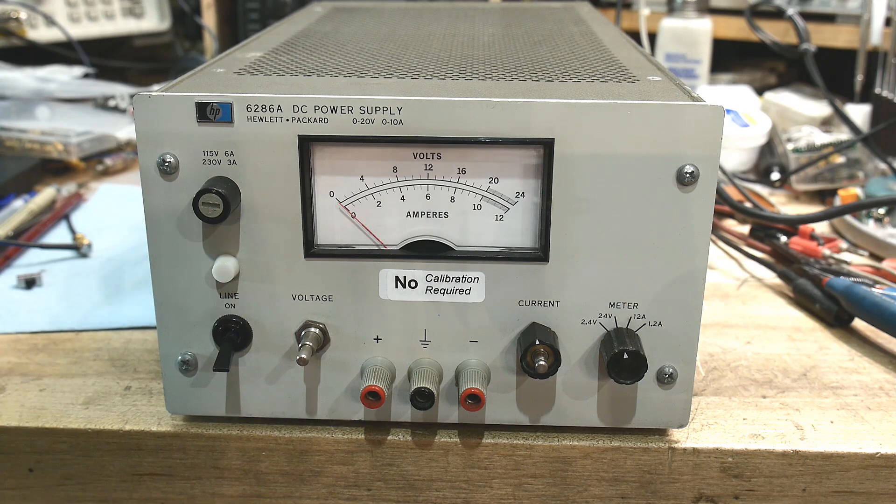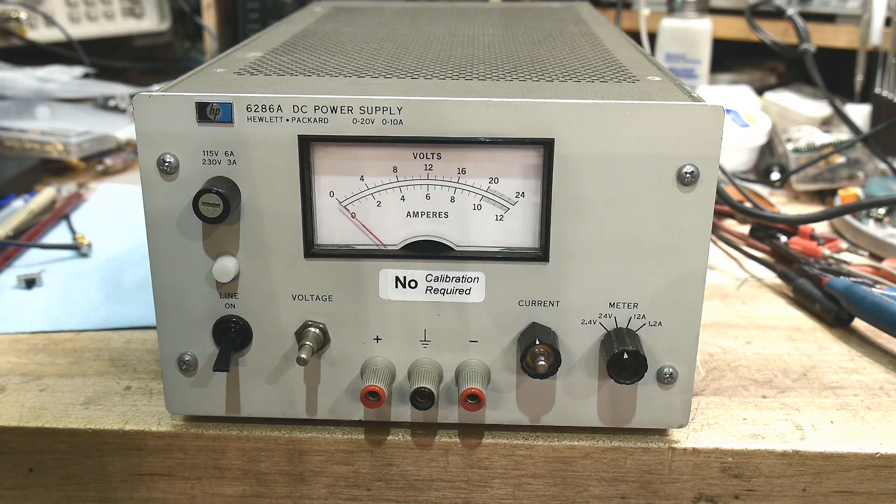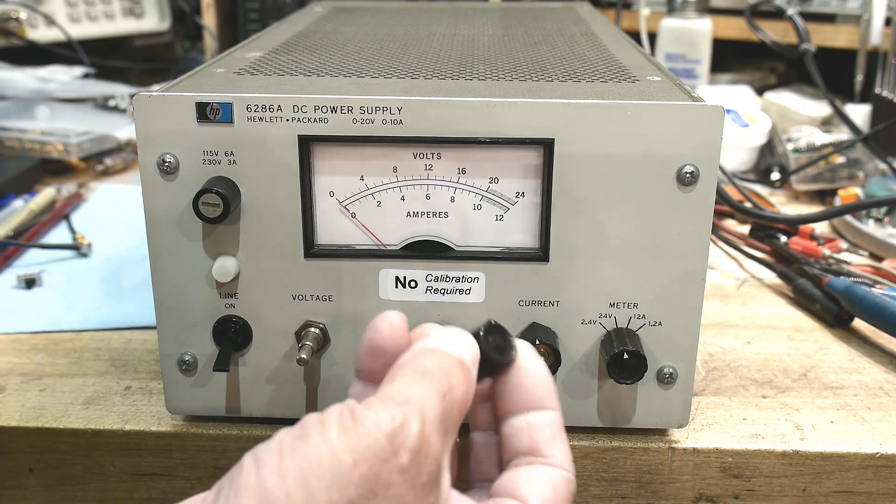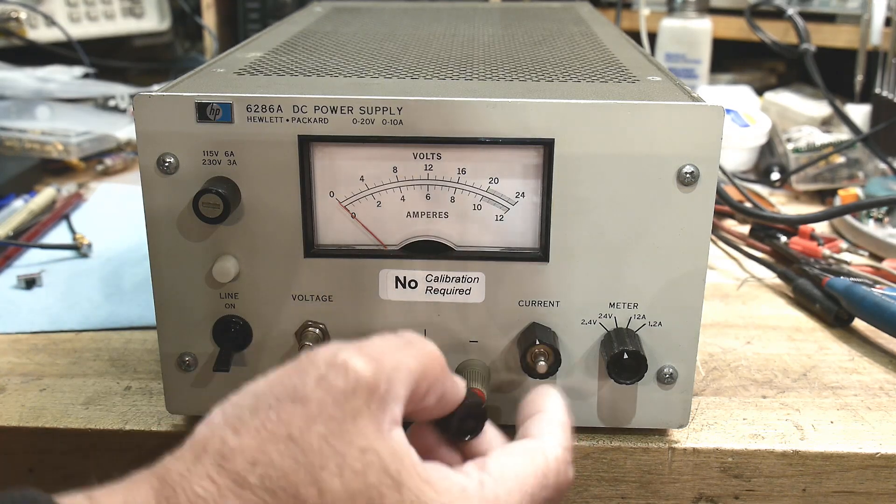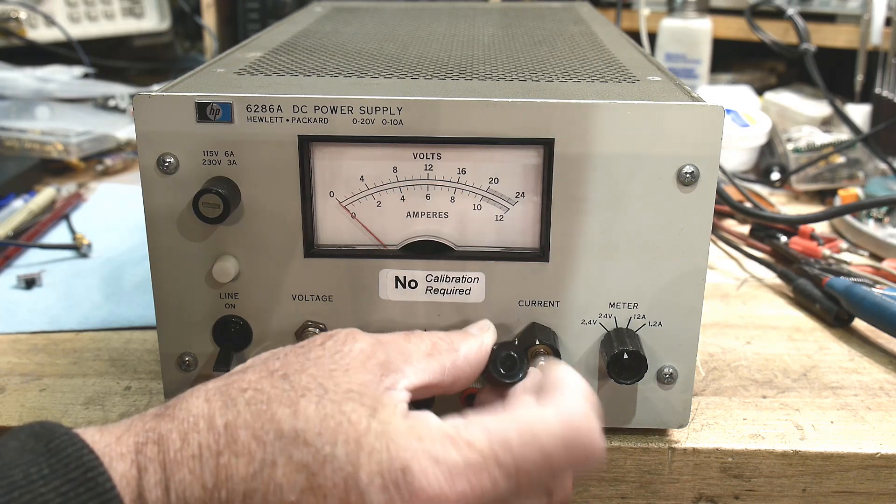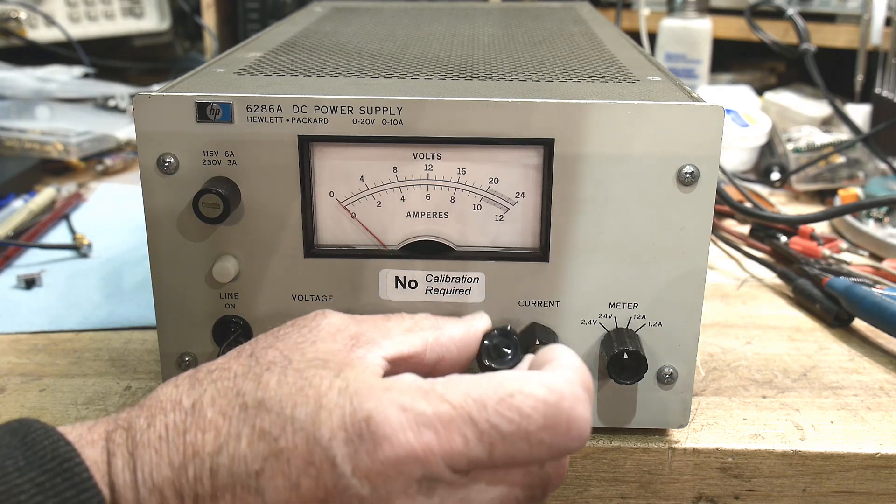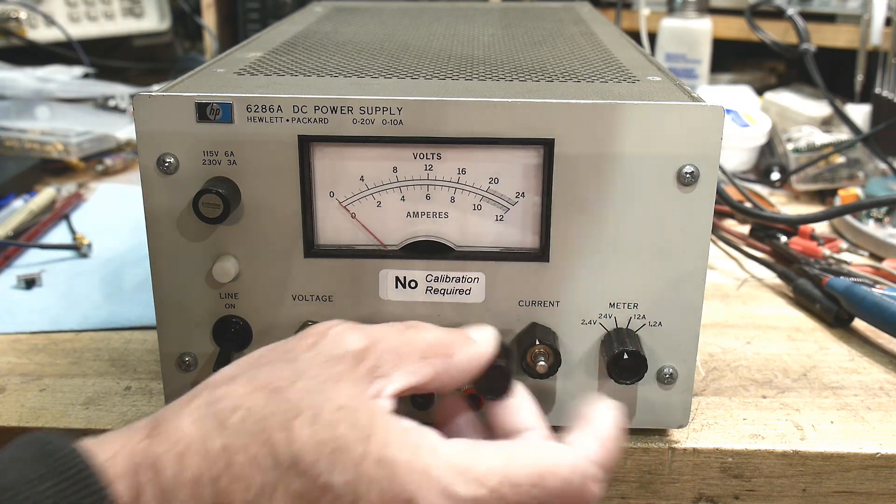I looked through my junk bin. I always save knobs. People who sew save buttons, I save knobs. I have this knob here which is a perfect match, except it's only a single layer. But I'm sure I can just go onto the lathe or mill and remove the top of it.